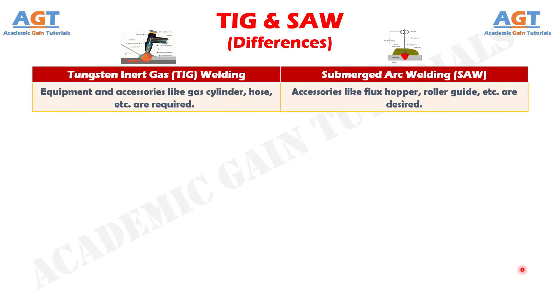Number 12: in TIG welding, equipment and accessories like a gas cylinder, hose, etc. are required, whereas in submerged arc welding, accessories like a flux hopper, roller guide, etc. are desired.